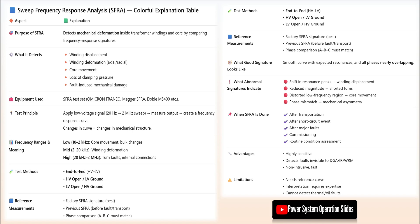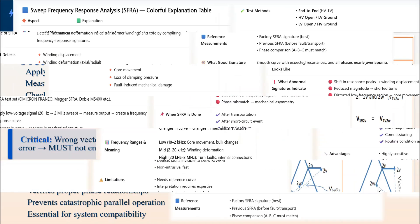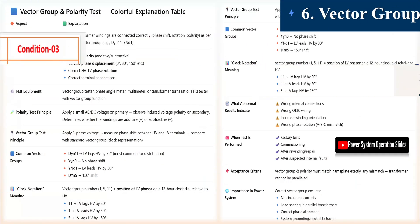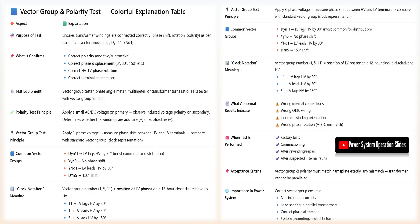Test 4: Dissolved Gas Analysis (DGA) Sampling. Dissolved Gas Analysis (DGA) is a powerful diagnostic technique that detects internal transformer faults through analysis of gases formed in the insulating oil. The sampling procedure requires careful attention to detail to ensure accurate results. After cleaning the sampling port, approximately 0.5 liters of oil is flushed before collecting the sample. The vacuum bottle is filled slowly to avoid bubble formation, then sealed airtight and labeled with parameters including temperature and date.